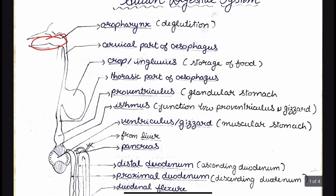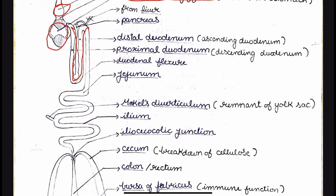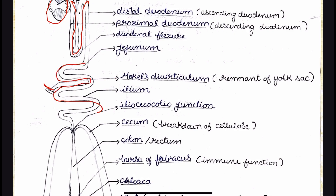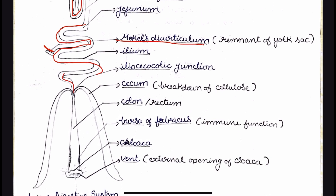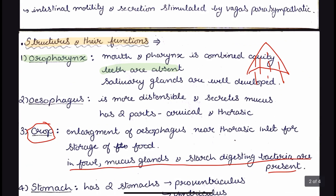Looking at the diagram: first we have the oropharynx, where the mouth and pharynx are combined. Then we have the cervical part of the esophagus, the thoracic part, and in between them the crop. Then we have the proventriculus and then the ventriculus, which is made up of four muscles — thick and thin — that help in contraction causing the grinding of the food. Then we have the duodenum in the form of a loop, with distal or ascending and proximal or descending parts. Then we have the jejunum and ileum, and at their junction, Meckel's diverticulum is present. Then we have the ileocecocolic junction — the colon and the two ceca. At last we have the cloaca, and dorsal to the cloaca is the bursa of Fabricius, which has immune function and is not part of the digestive system.